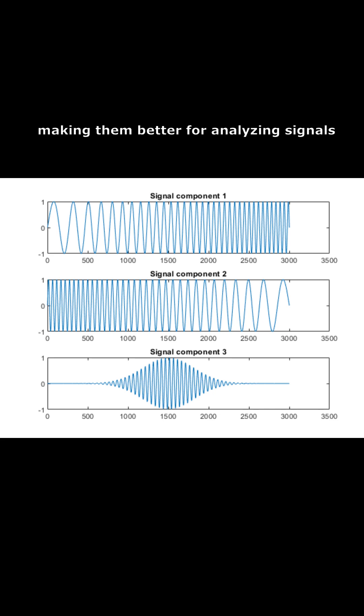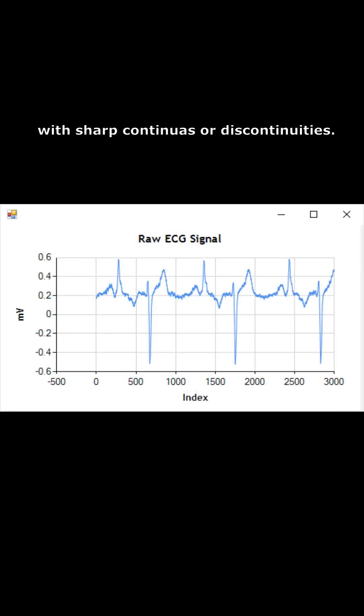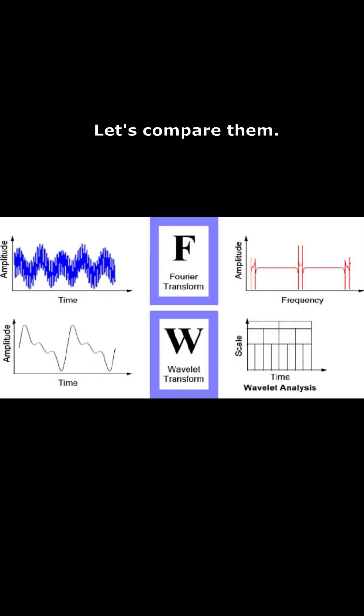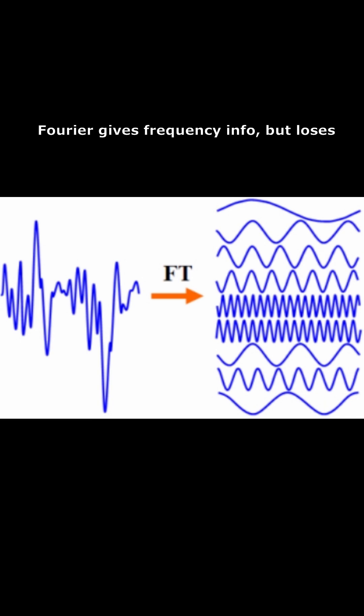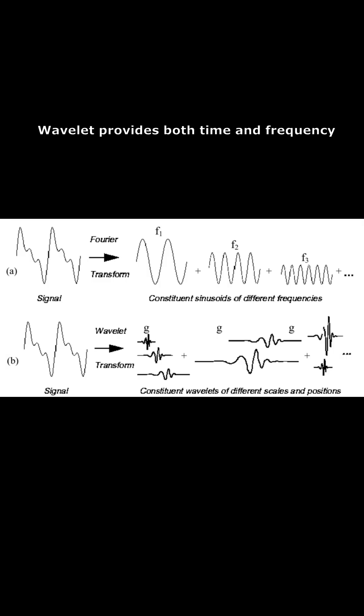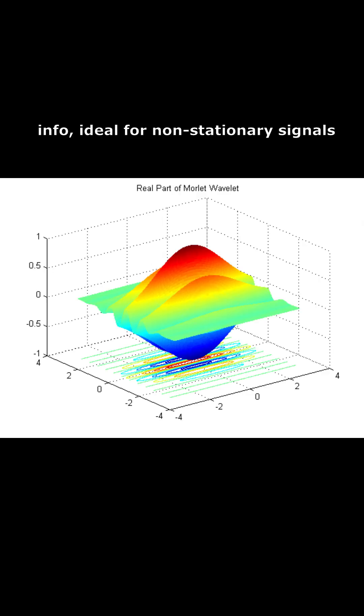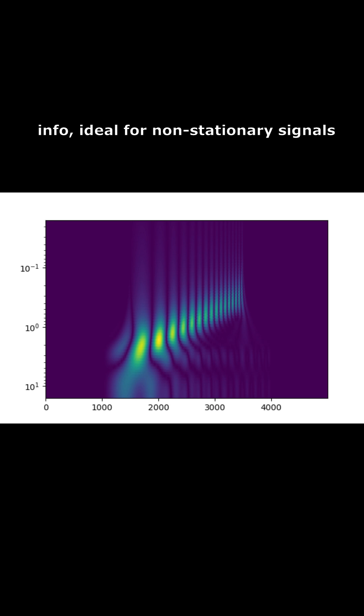This makes them better for analyzing signals with sharp changes or discontinuities. Let's compare them: Fourier gives frequency info but loses time details, good for stationary signals. Wavelet provides both time and frequency info, ideal for non-stationary signals like audio and images.